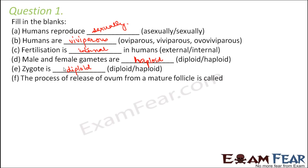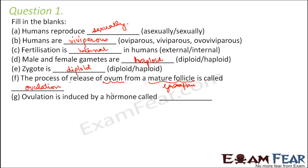The process of release of ovum from a mature follicle is called ovulation. The ovum is the egg, and the mature follicle is the Graafian follicle, present in the ovary. Ovulation is induced by a hormone whose level reaches its peak, causing the Graafian follicle to rupture and release the egg. That hormone is LH — the luteinizing hormone.